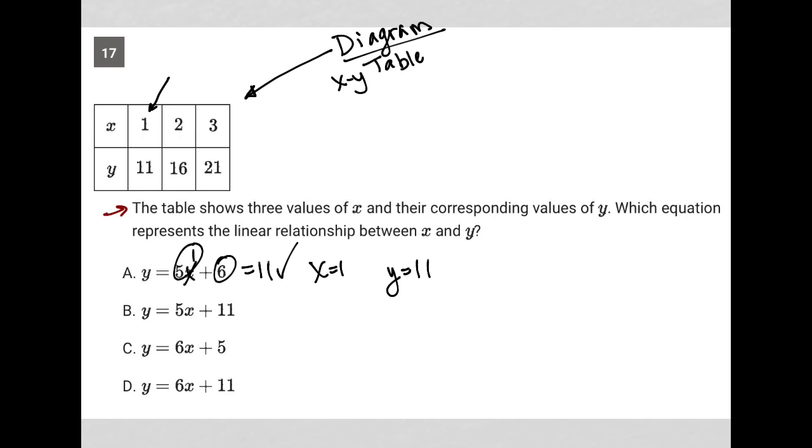But I don't know if that's the right answer yet because there might be other answer choices that do the same thing. For choice B, when I replace X with 1, 5 times 1 is 5, plus 11 is 16. So not 11. Therefore, choice B is gone. Choice C, we can do the exact same thing. 6 times 1 is 6, plus 5 is 11. So choice C is a possibility.